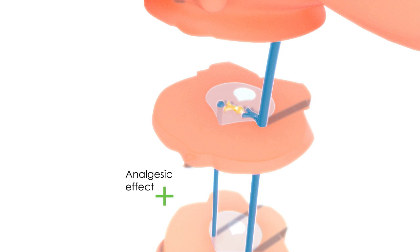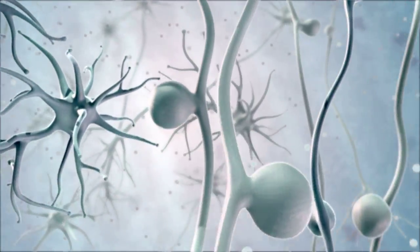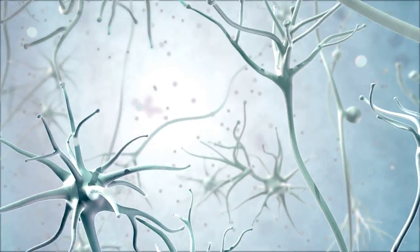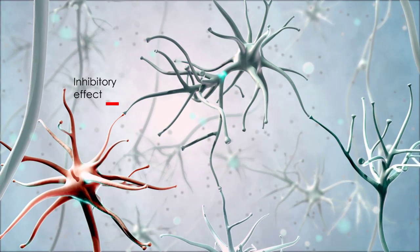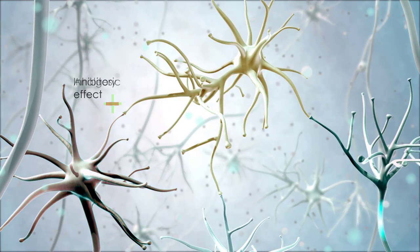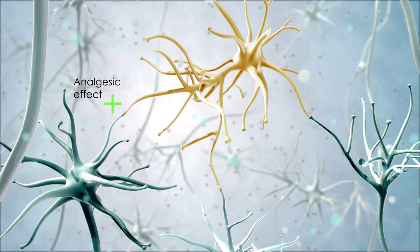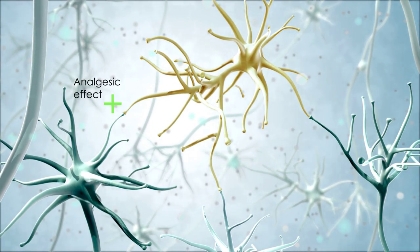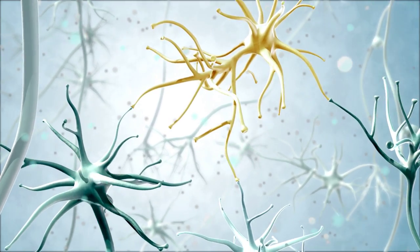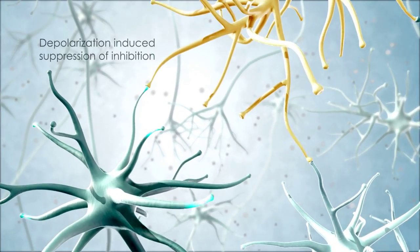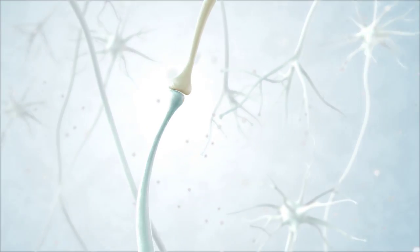However, this neuroregulatory process is thought to be tonically restricted by inhibitory GABAergic off cells. Ascending pain signals relayed through the periaqueductal gray suppress the activity of GABAergic off cells through cannabinoid modulation, thereby increasing activity in the descending pain modulation pathway and increasing the analgesic effect. This is called depolarization-induced suppression of inhibition.